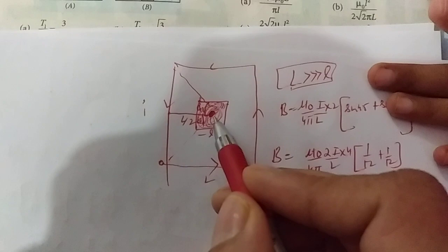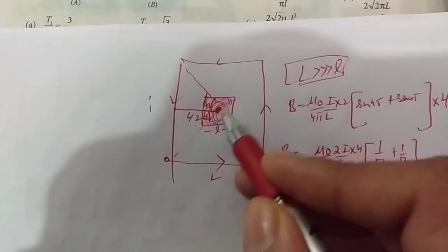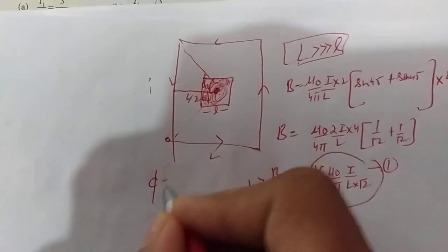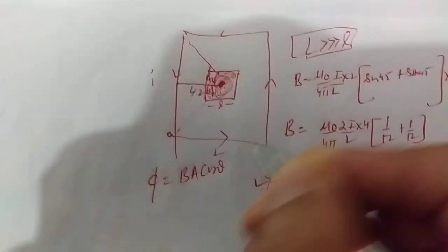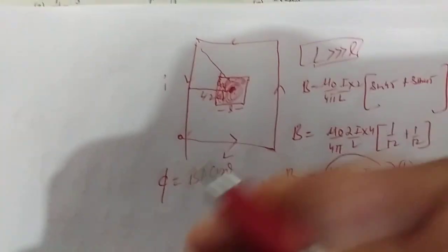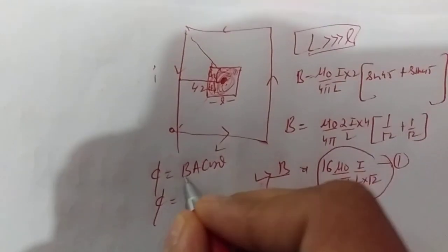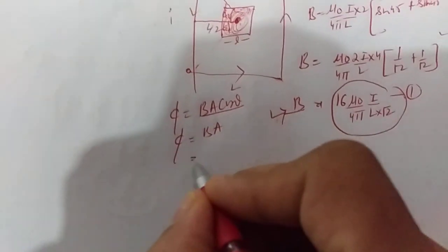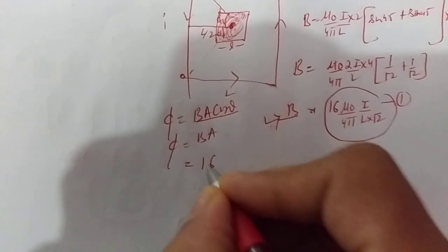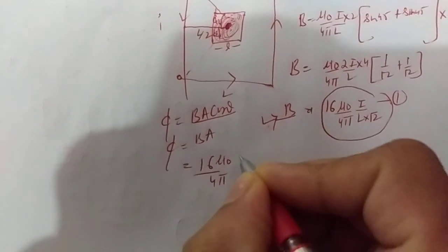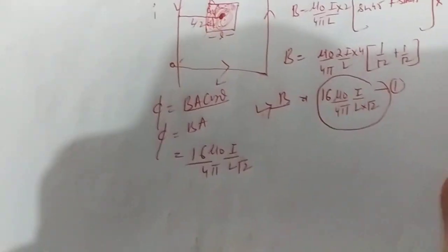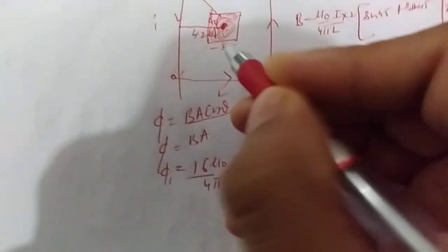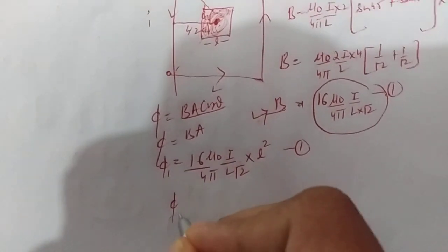So we have got to know the field in this loop. Now we will see what is the flux linked with the smaller loop. The flux formula is φ = BA cos θ. Theta here is 0 because the area vector is outside and the field is outside. So I will simply write φ = BA. The area is l² and we substitute the B value we calculated.